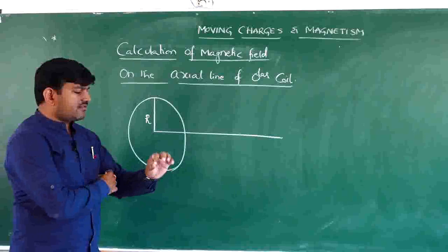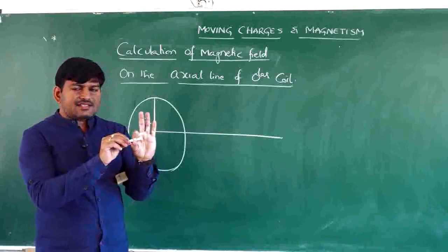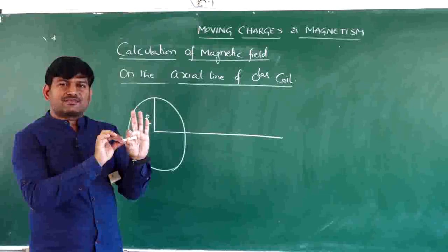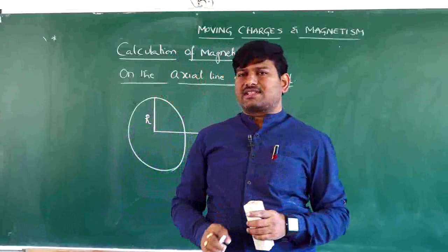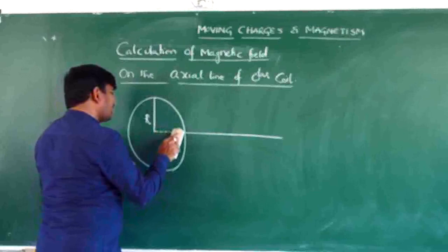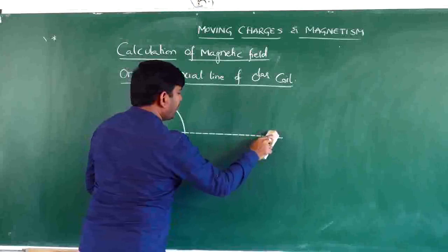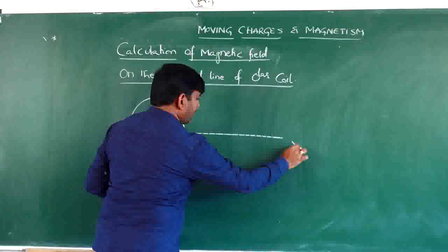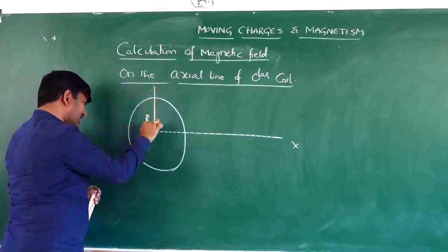The axis of the coil is the straight line passing through the center of the coil and perpendicular to its plane. A line passing through the center and perpendicular to the plane is said to be the axial line. I will indicate the axial line with dotted lines. Dotted lines indicate that it is perpendicular to the plane of the coil. This is the x-axis.